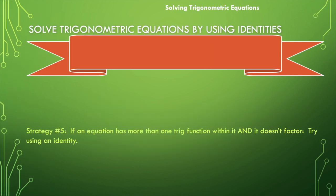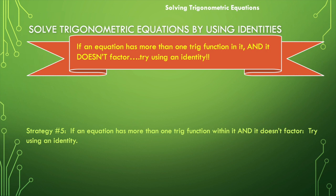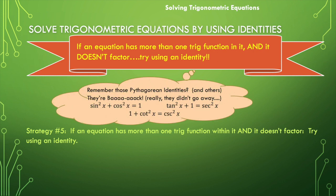Before we do this, we need to remind ourselves what are the fundamental trig identities, because we are going to use them to transform equations that don't line up the way that we think they should. Let's review the Pythagorean identities. The big Pythagorean identity is sine squared of x plus cosine squared of x is equal to 1. From this one, we can derive these other two: tangent squared of x plus 1 is equal to secant squared of x, and 1 plus cotangent squared of x is equal to cosecant squared of x. Jot these down on the side of your notes just so you have them handy.